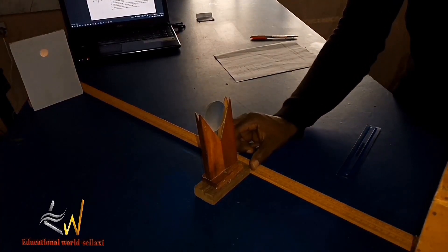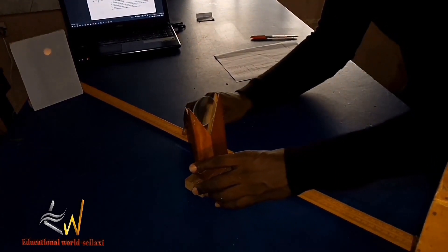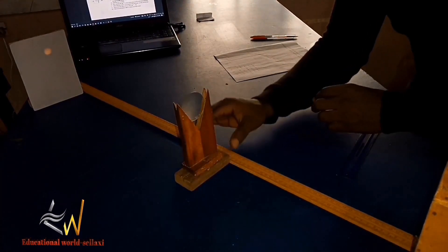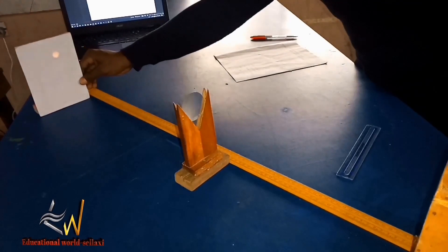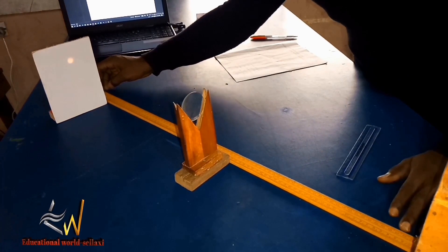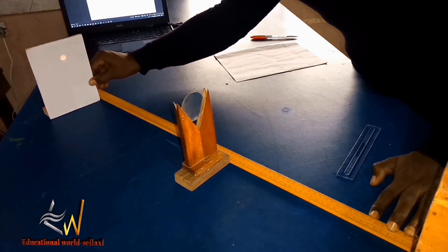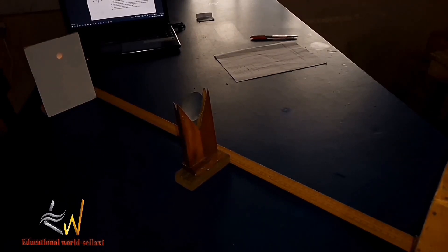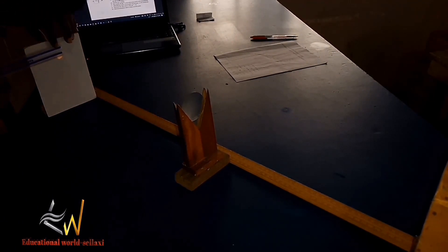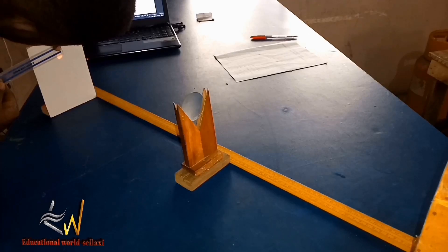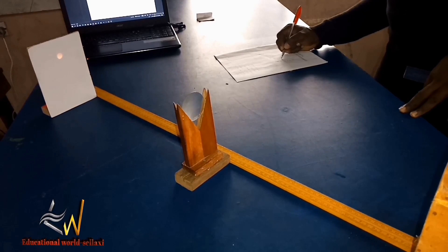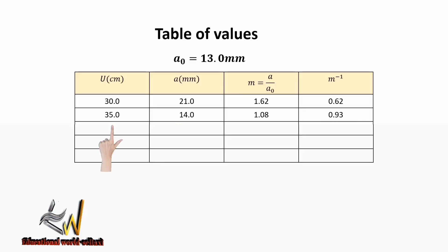We now adjust the position of the lens and lens holder to a distance of 35 cm. We then adjust the position of the screen again until a very clear image is formed, and measure the diameter or the size of that image. In our table of values, when U is 35.0 cm, A is 14.0 mm. The magnification is 1.08 and the inverse is 0.93.